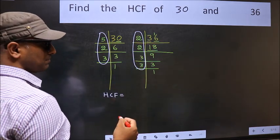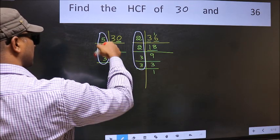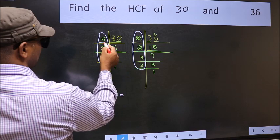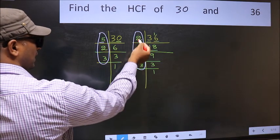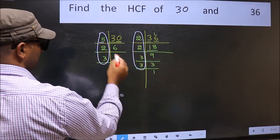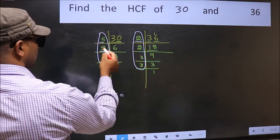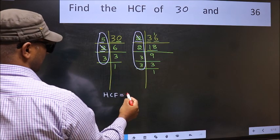now let us find the numbers which should be present here and here. Starting with the number 5, do we have 5 here? No. Next number 2, do we have 2 here? Yes. So, cut 2 right here.